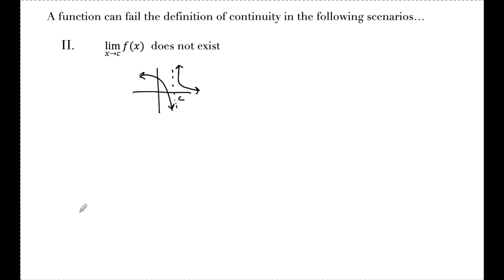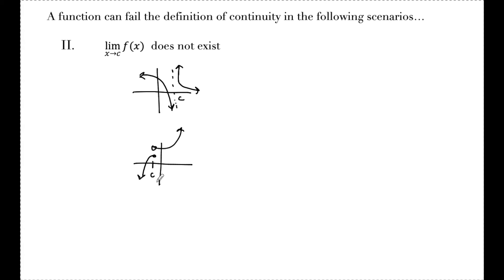The other way that a function can fail part two of the definition is with a jump discontinuity, where at x equals c the function jumps from one y value to another. As I can see, the limit as x approaches c from the left is this y value, and the limit as x approaches c from the right is this higher y value. So the limit as x approaches c does not exist, and this function is not continuous at x equals c.